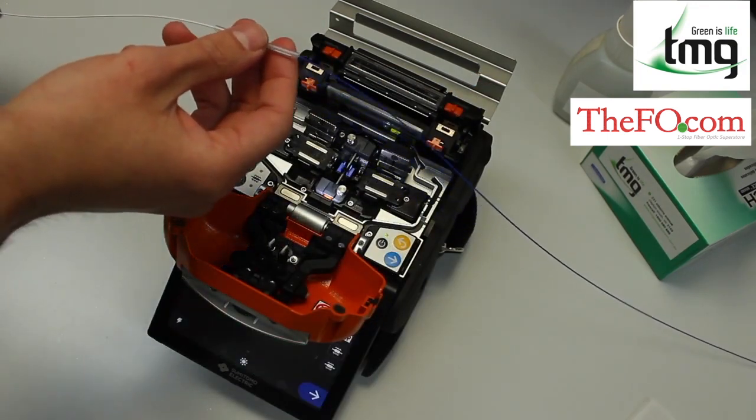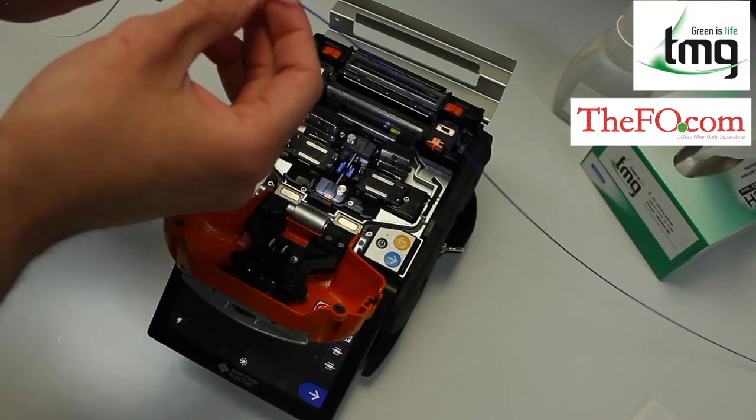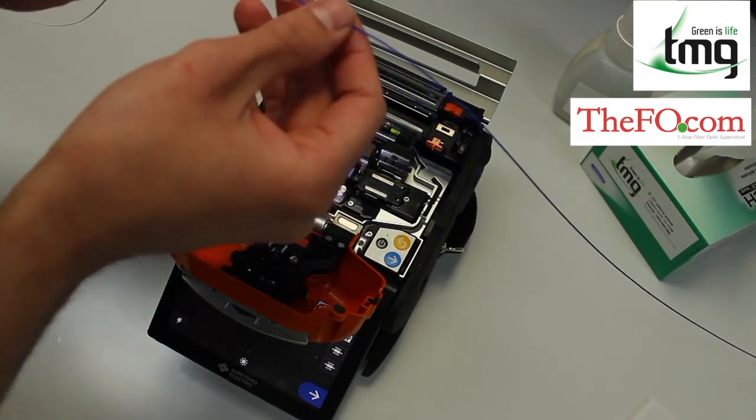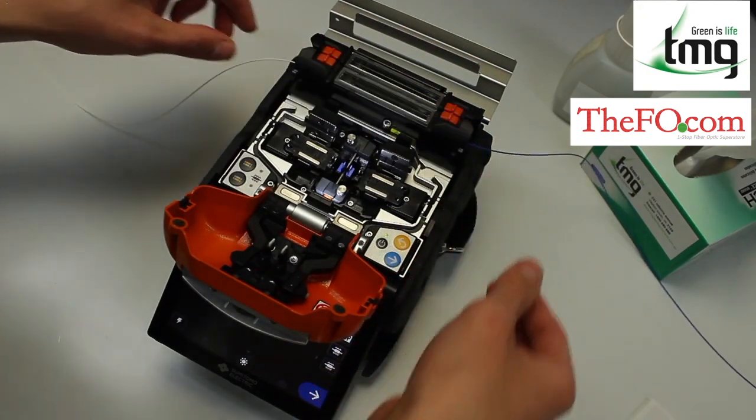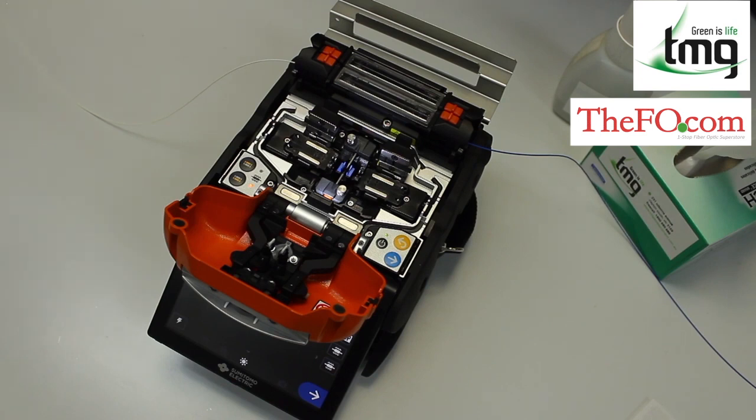I then can pull up the splice sleeve, position it, and pop it straight into the first oven. The splicer will just get it going with heating up the splice sleeve.